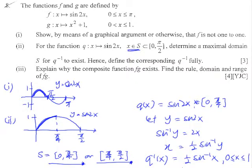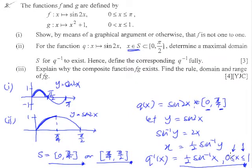Since we include 0 and pi over 4 in the domain, the corresponding range values 0 and 1 are both inclusive. Now for part 3 of the question: explain why the composite function fg exists, and find the rule and range.